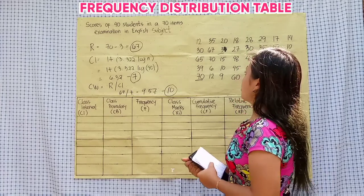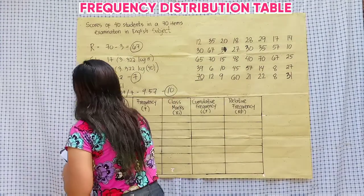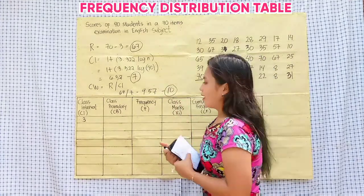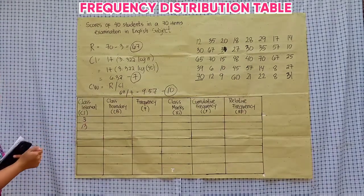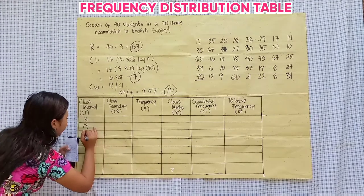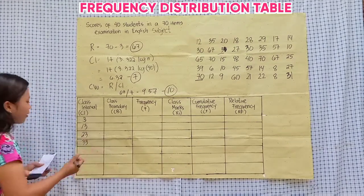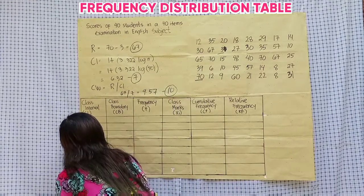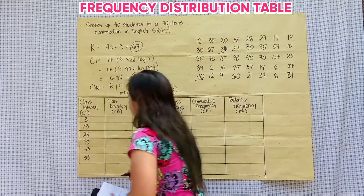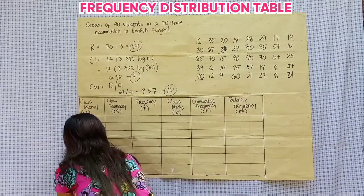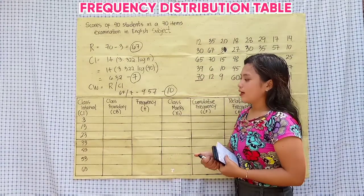Let's proceed to the class interval. We need to copy the lowest value, which is 3. Then add the class width, which is 10. So: 3, then 3 plus 10 is 13, 13 plus 10 is 23, 23 plus 10 is 33, 33 plus 10 is 43, 43 plus 10 is 53, and 53 plus 10 is 63. This is our lower class limit.